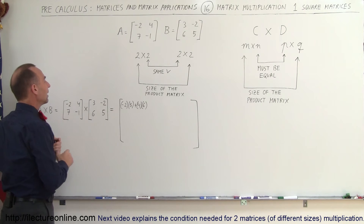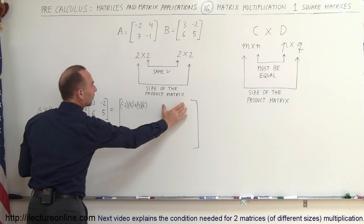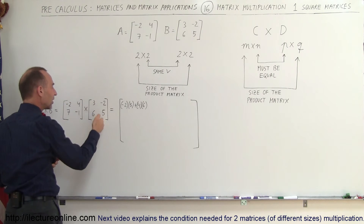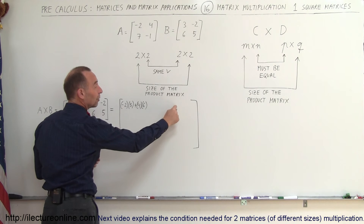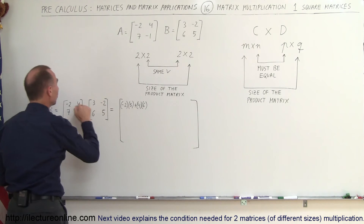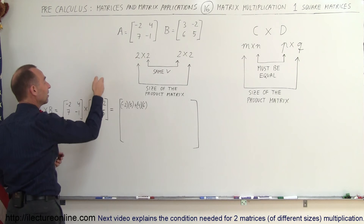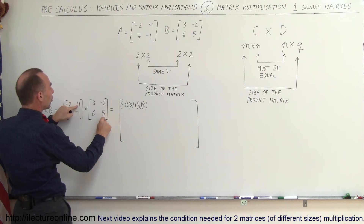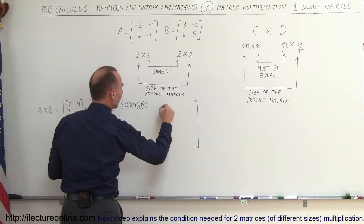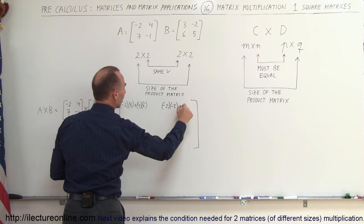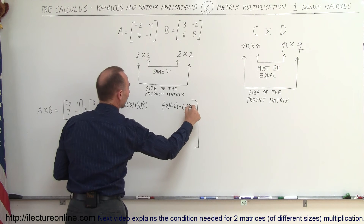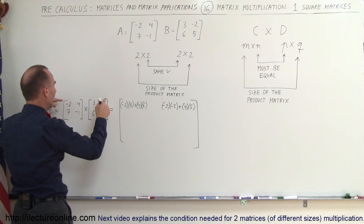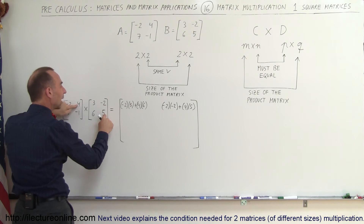Now to get the element in the upper right of the resulting matrix, C12, I'm going to multiply the first row of the first matrix times the second column of the second matrix. So this becomes negative 2 times negative 2, plus 4 times 5. We move to the left on the first row and down on the second column.